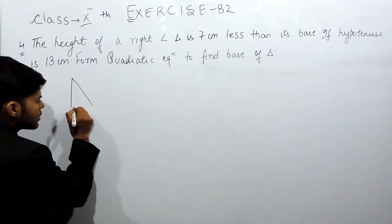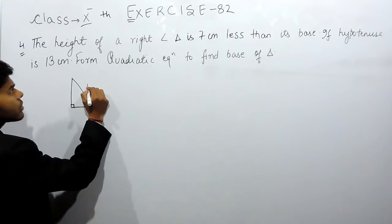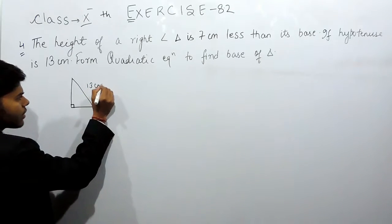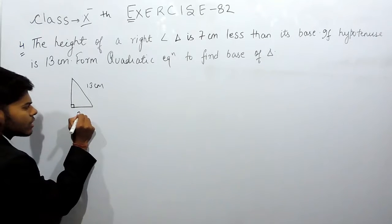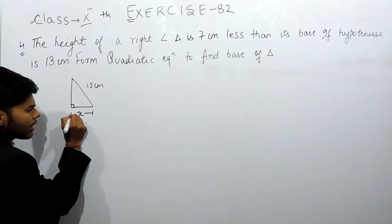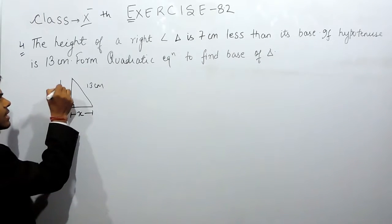So this is a right angle triangle, this is 90 degrees, the hypotenuse is 13 cm. And it says that the height is 7 cm less than the base. So if the base is x, then the height is 7 cm less, means x minus 7 cm.